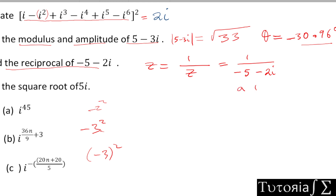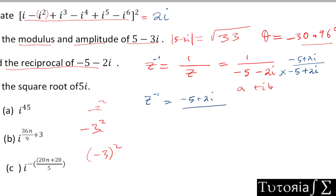So z⁻¹ = (-5 + 2i) / [(-5)² - (-2i)²]. Using the shortcut, the denominator is the real part squared minus the imaginary part squared: (-5)² - (-2i)². We need to be careful here — the imaginary part is -2i, so we square the full term.